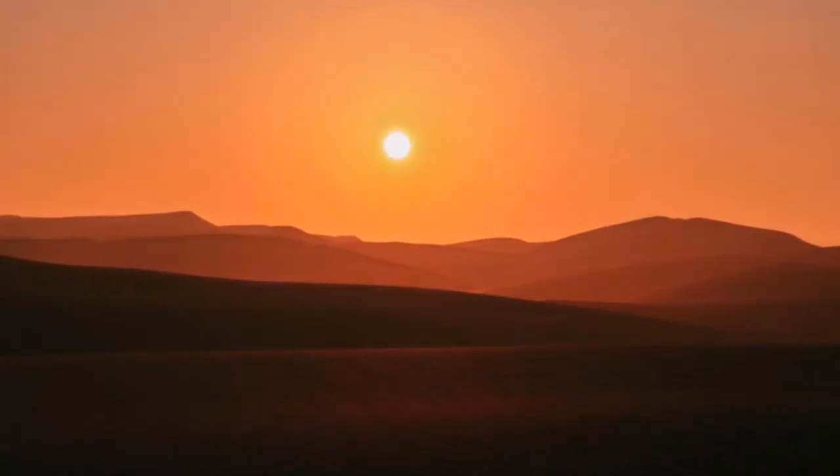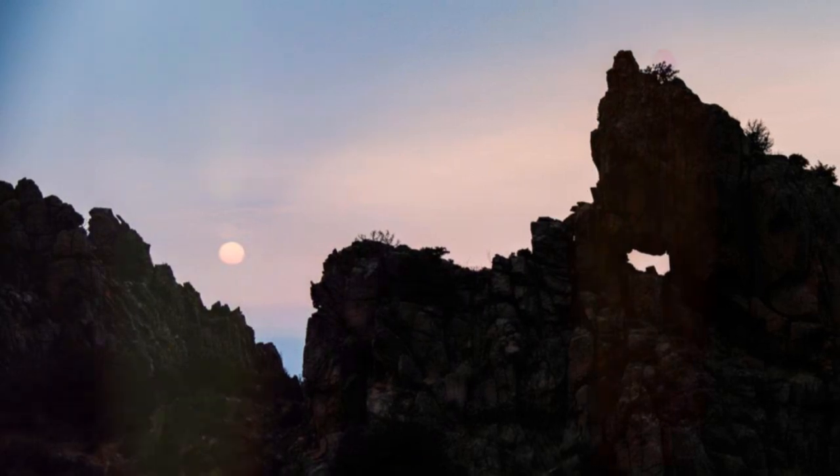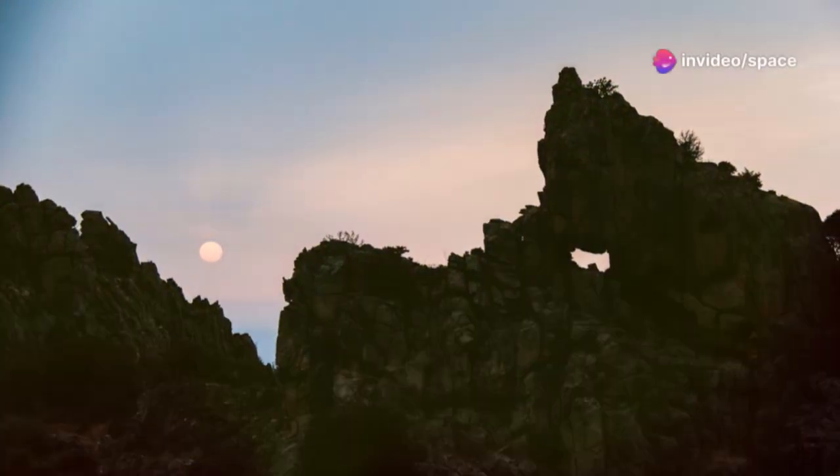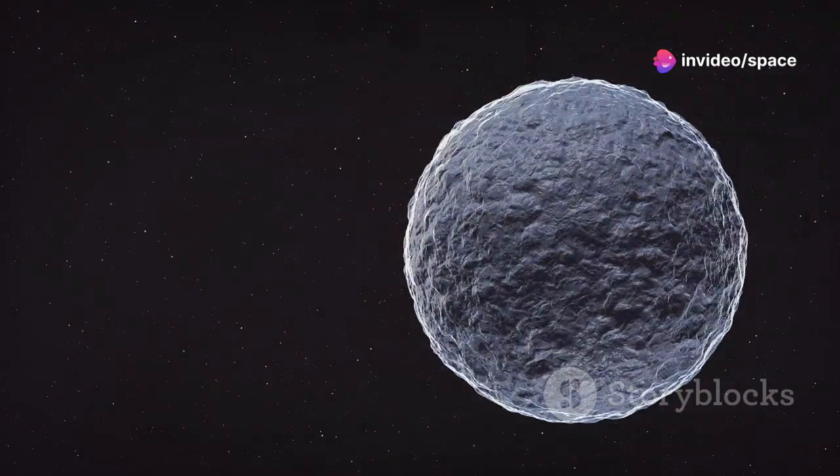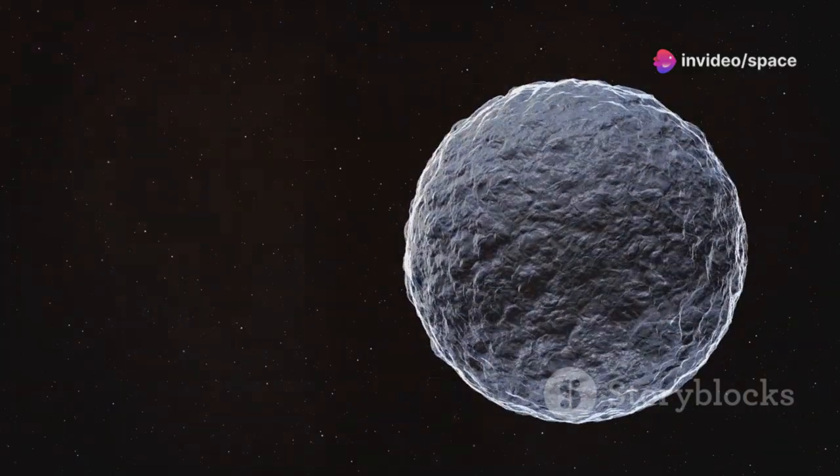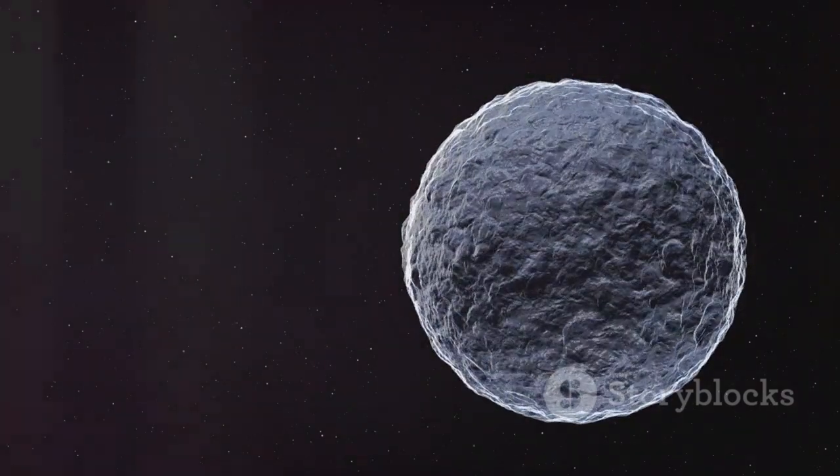In this zone, the sun lingers low on the horizon, casting long shadows and creating a strikingly beautiful landscape. The terminator zone might be the most habitable area on Proxima b, where temperatures could be suitable for liquid water to exist.